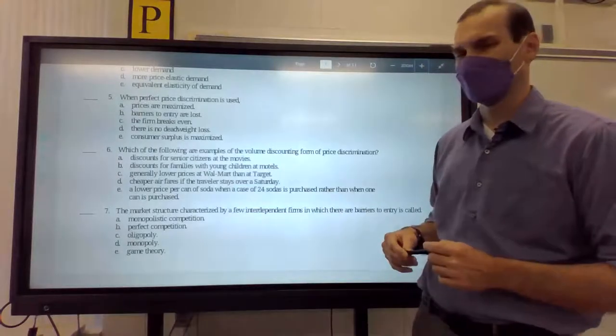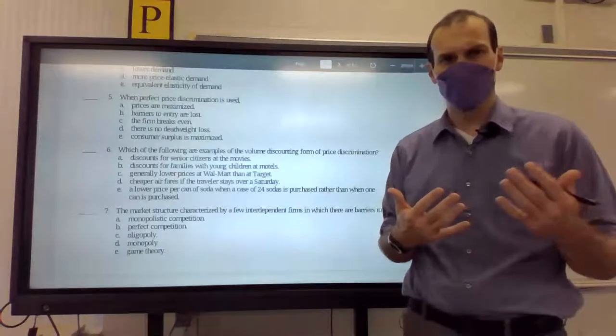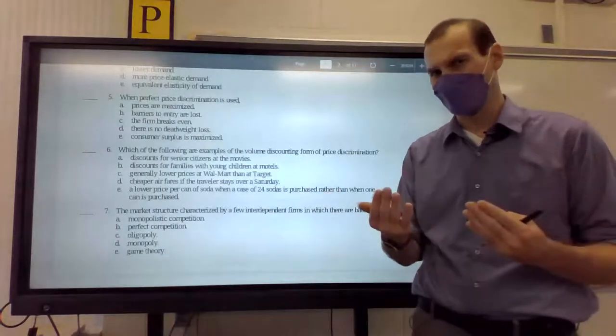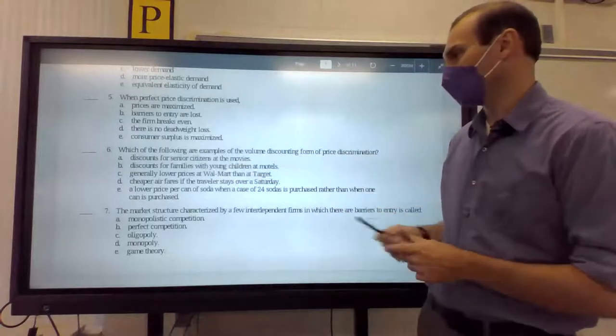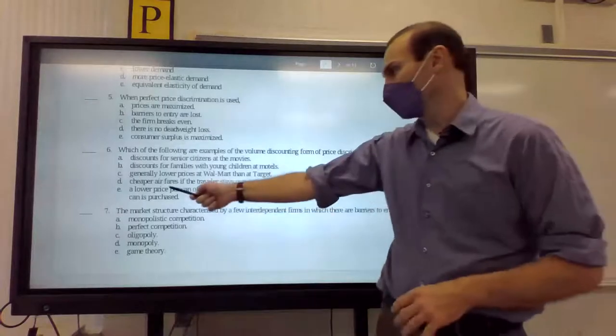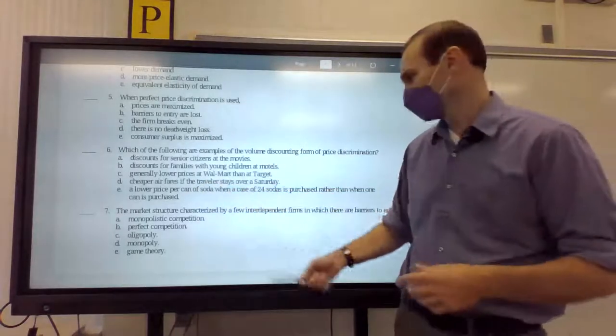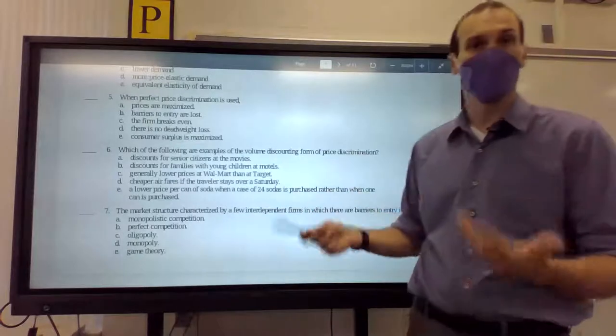Therefore, they're just willing to pay less for things. They'll also go to things earlier for that, which means you can give senior citizen discount for the early crowd. The later crowd's more inelastic and they pay more. Discounts for families and young children at motels? No, just children don't destroy as much. They're at a lower cost. Generally lower price at Walmart than Target? Well, those are stores that do buy discounts, but it's talking about why is Walmart cheaper than Target? That's competitive pricing. Cheaper airfares for travelers who stay over Saturday? That is price discrimination, but it has nothing to do with volume. But a lower price per can of soda? Yep, there we go.